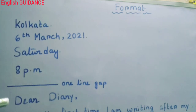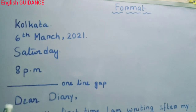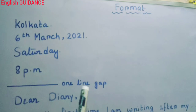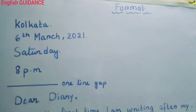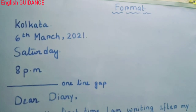This is the format you have to maintain. You have to give one line gap, and then write 'Dear Diary.' Always remember to give one comma after it. Another thing: 'Dear' will be in capital letter as well as 'Diary' will also be in capital letter.